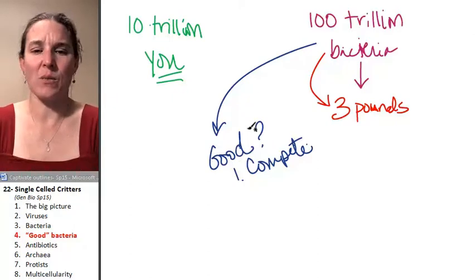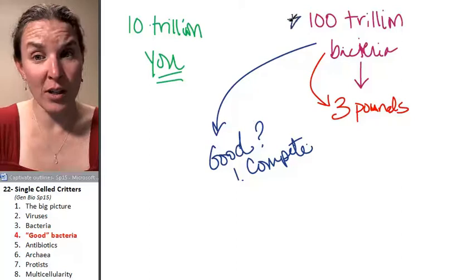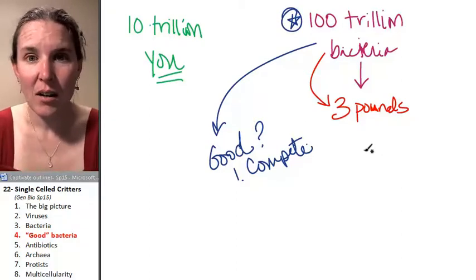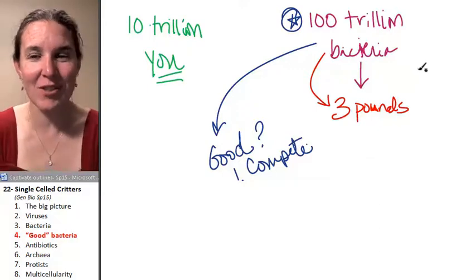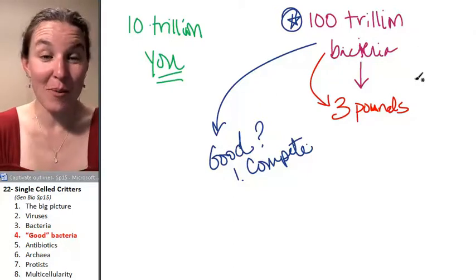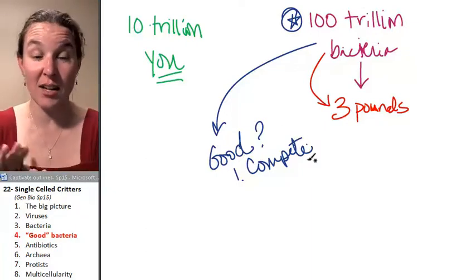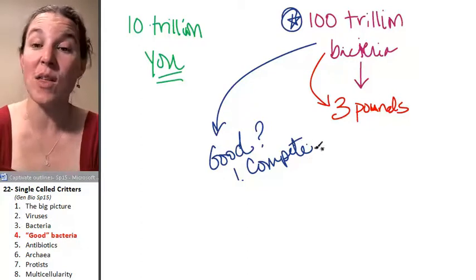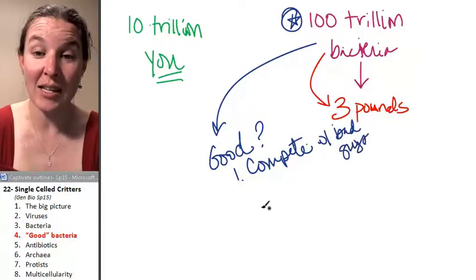the reason why they're considered bad is because they make you sick. That's relationships amongst critters. Your 100 trillion that are living here, what would happen if they made you sick? You wouldn't be alive. You probably would be like, there's 100 trillion people trying to kill me. So these are 100 trillion that are either just chilling and not bugging you at all or possibly doing some good things. So they compete with the bad guys, which makes it harder for bad guys to come in.